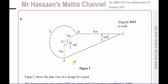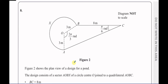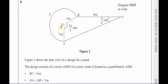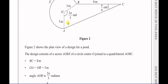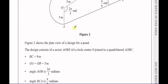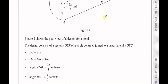It says figure 2 shows the planned view of a design for a pond. The design consists of a sector AOBX — this part of the circle here — of centre O, joined to a quadrilateral AOBC. BC is 8 centimetres, OA and OB are both the radius of the circle at 3 metres, the angle AOB is 2π/3 radians, and angle BCA is π/6 radians.